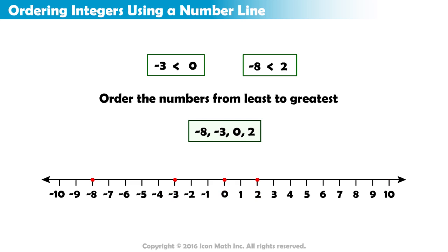Written in order from least to greatest, we have negative 8, negative 3, 0, and 2.